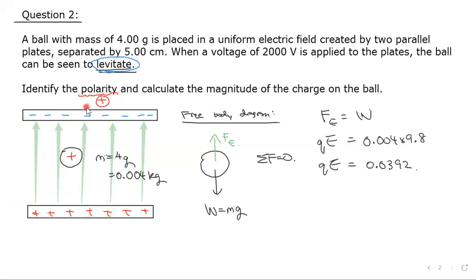Now remember, when dealing with electric fields between plates, your electric field E equals V over d. In this case, V is 2000, as given in the question, and d is five centimeters, that's given in the question here, which of course you have to remember to change into meters.